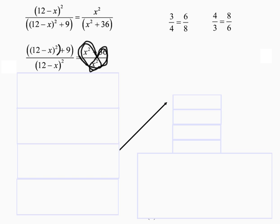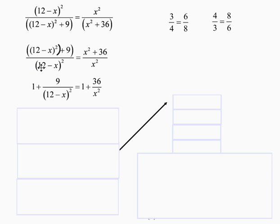12 minus x squared divided by 12 minus x squared equals 1, so there's where the 1 comes from. 9 divided by 12 minus x squared is here left over. x squared divided by x squared is 1. 36 divided by x squared is 36 divided by x squared. I think you might be able to guess what happens next. I'm going to subtract 1 from both sides.